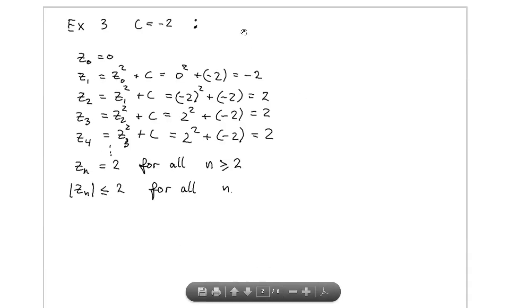So let's see if we have this constant C equal to minus 2, what's happening then? Then we get z_0 equal to 0, which is in all cases, z_1 is 0 plus minus 2, and we obtain that this is equal to minus 2.